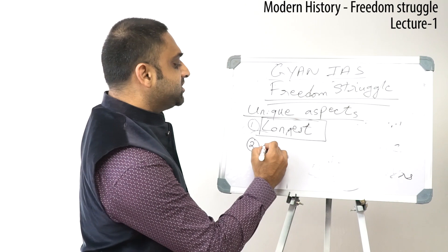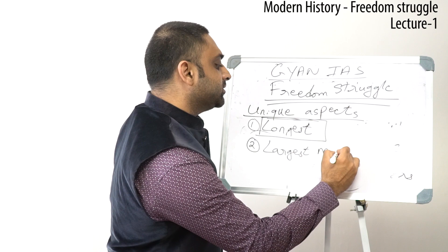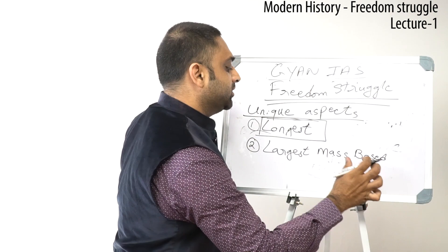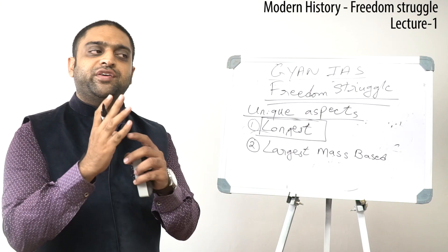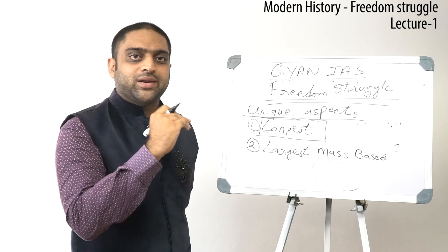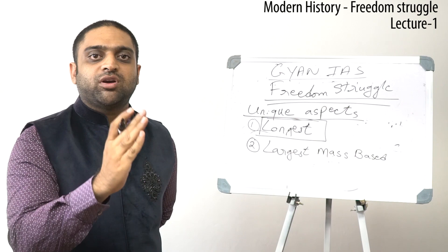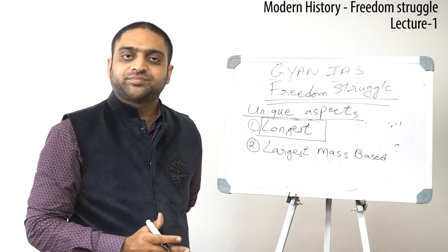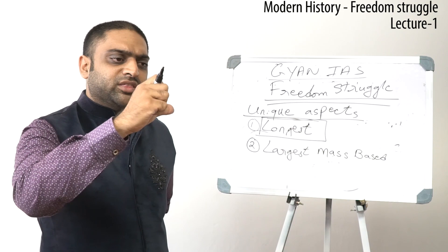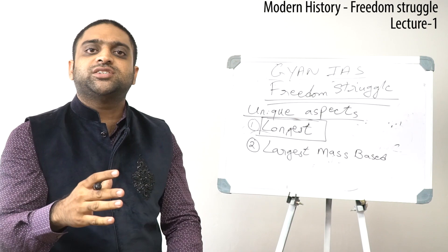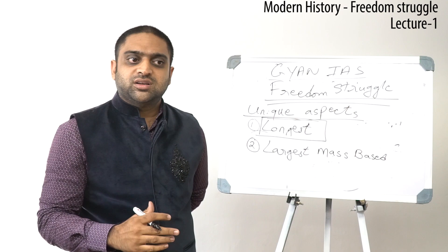The second unique aspect is that it was the largest mass-based movement — the largest mass-based anti-colonial freedom struggle. If we divide our freedom struggle into three parts: Part 1 was between 1885 to 1905, called the Age of Moderates, when it was led by G.K. Gokhale, M.G. Ranade, W.C. Banerjee, Surendranath Banerjee, and others. During this first phase, the freedom struggle was restricted only to the uppermost, elite sections of the Indian population.